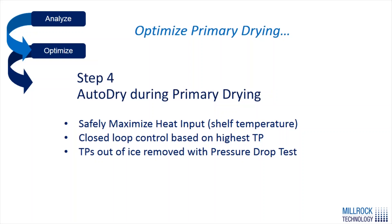AutoDry also conducts a pressure drop test at a user-set interval between 30 to 180 minutes to determine which thermocouples are out of ice. During the test, the system reduces chamber pressure to a set point of zero for a minute and a half. As chamber pressure decreases, it shifts the solid-vapor equilibrium to a colder temperature, so all remaining ice in the product reduces in temperature. Thermocouples still submerged in ice see a temperature drop; those that don't are considered out of ice and are excluded from control — only thermocouples still in ice are used.